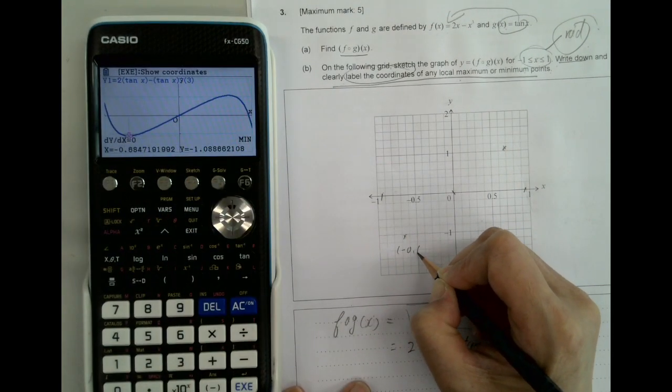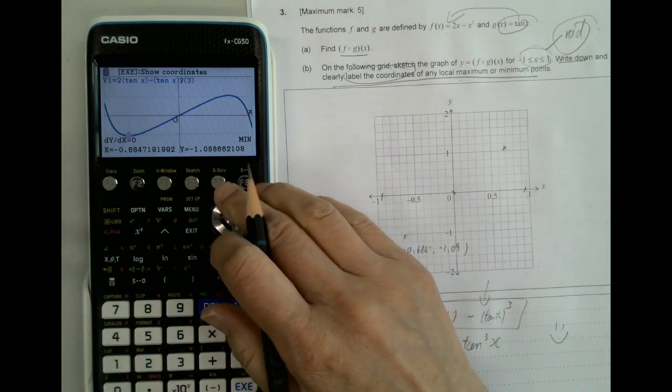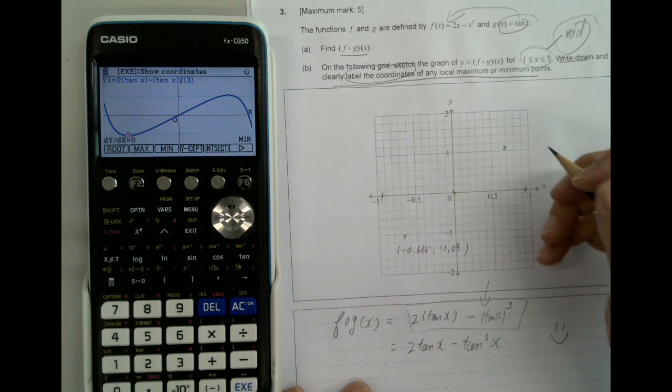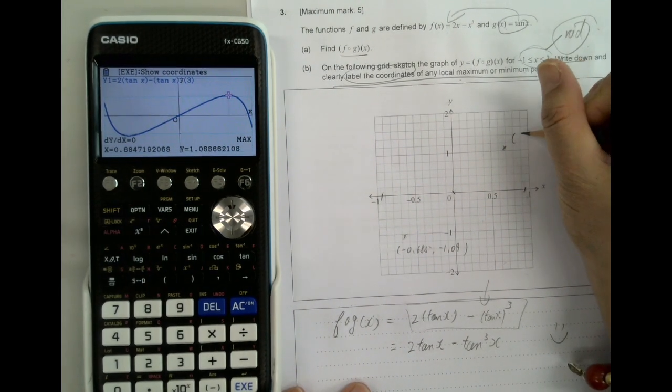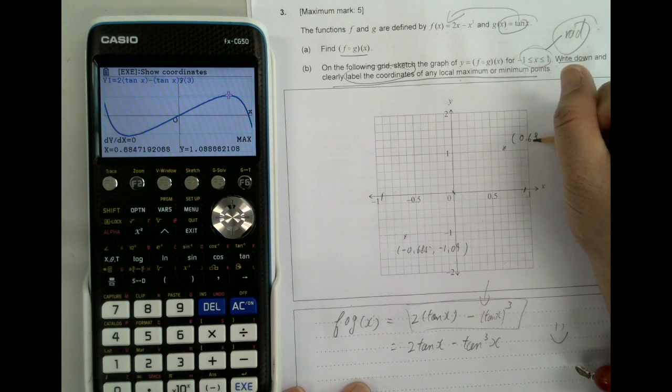Negative zero point six eight five, negative one point oh nine maximum. Even if you mark the point without the label, you still lost a point, so it's not worth it. So make sure you read the question carefully.